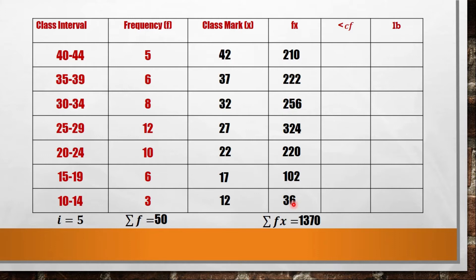Now for the lower cumulative frequency or less than cumulative frequency. Since your total frequency is 50, put 50 here. Then, for less than, you subtract going down. 50 minus 5 you have 45, 45 minus 6 you have 39, 39 minus 8 you have 31, 31 minus 12 you have 19, 19 minus 10 is 9, 9 minus 6 is 3. When this equals this part, that means you did it correctly.